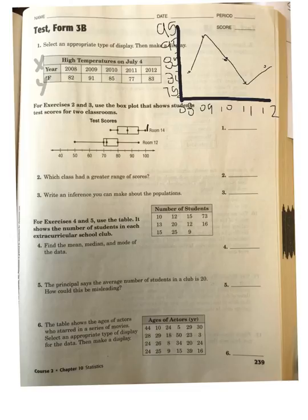Therefore, their range is about 25. For room 12, we see the maximum is about 95 and the minimum is 50. When you subtract those, you get about 45. Therefore, room 12 has a greater range of scores.